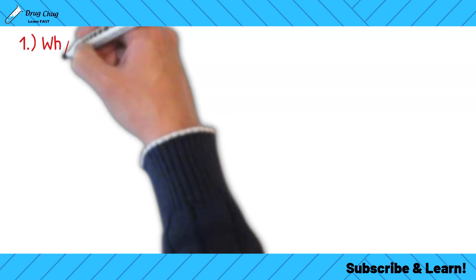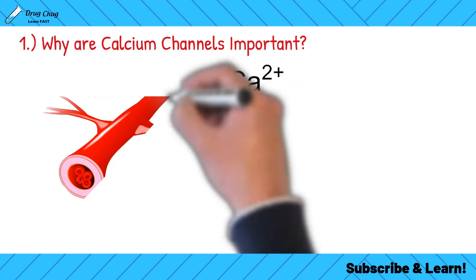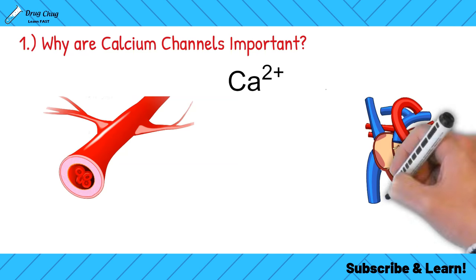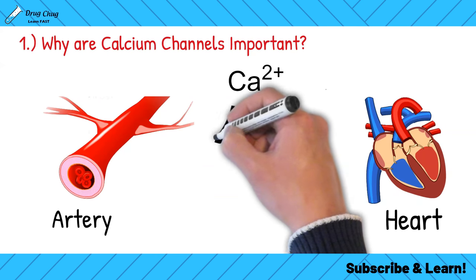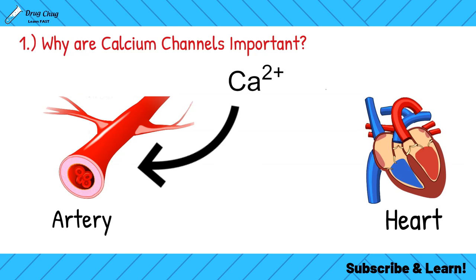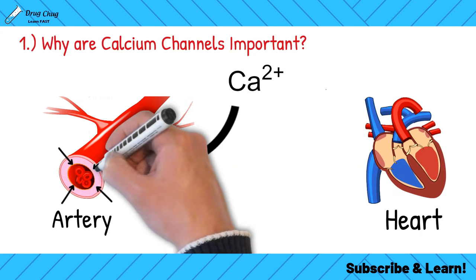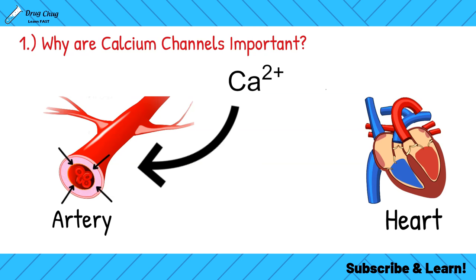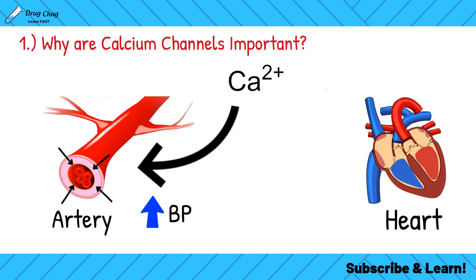To understand why we use calcium channel blockers, we need to understand why calcium channels are important. When calcium influxes into the body, it affects our vasculature — specifically our arteries. When calcium targets the calcium channels on our arteries, it causes vasoconstriction, which causes an increase in blood pressure.